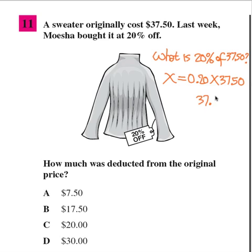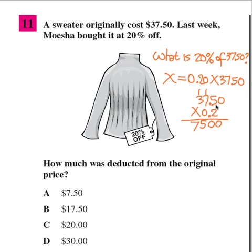37.50 times 0.2: 2 times 0 is 0, 2 times 5 is 10 carry 1, 2 times 7 is 14 plus 1 is 15 carry 1, 2 times 3 is 6 plus 1 is 7. With 3 decimal places, that gives $7.50. So $7.50 is 20% off. The answer is A.